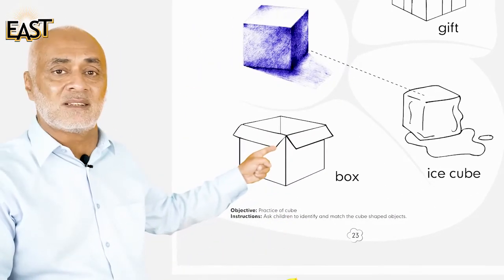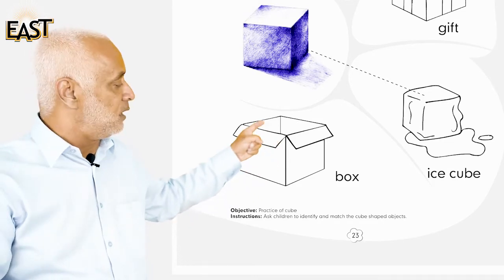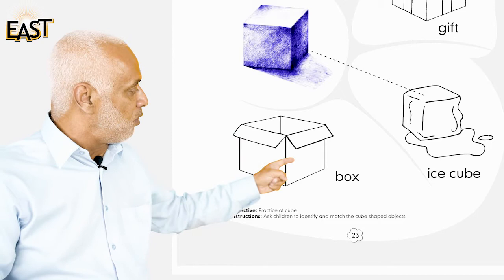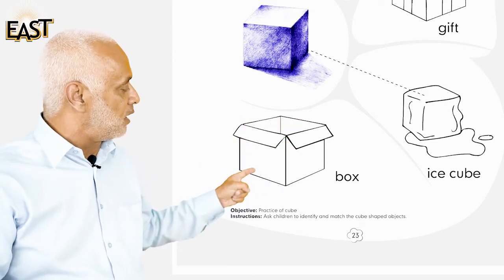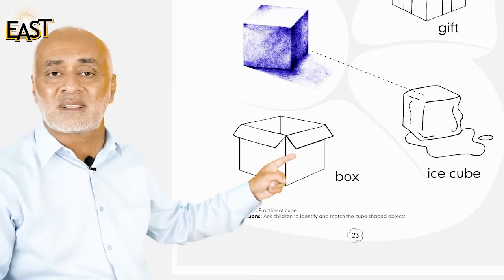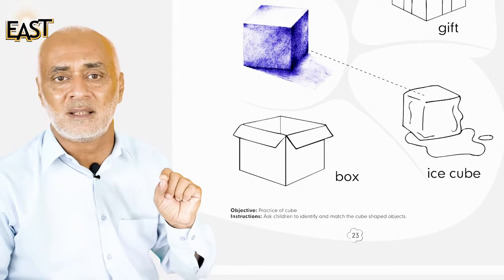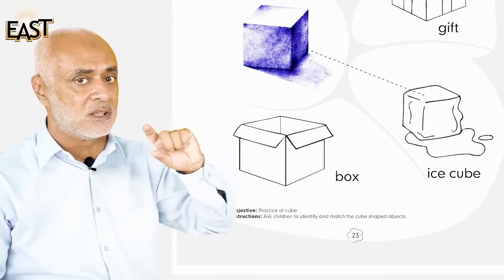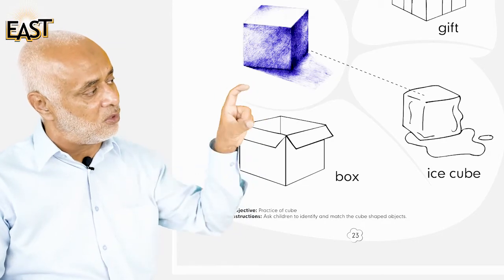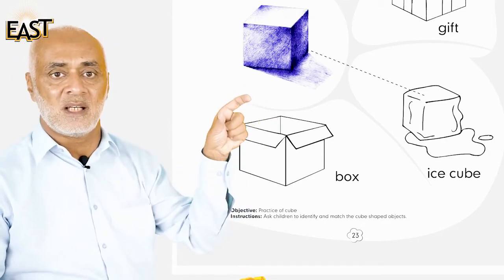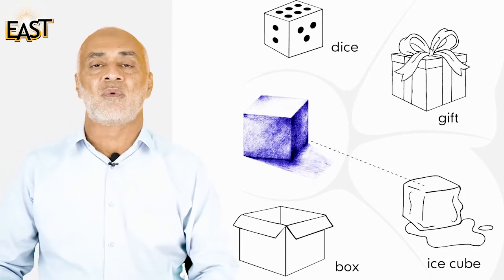See, what is this? This is a box. This box has all sides the same — all of its sides are of the same size, the same length. Is ki jitni bhi sides hain, wo same length ki, same size ki hain. Is liye this becomes a cube.